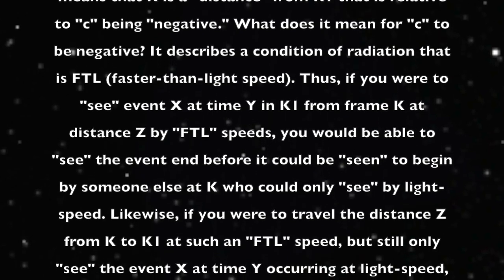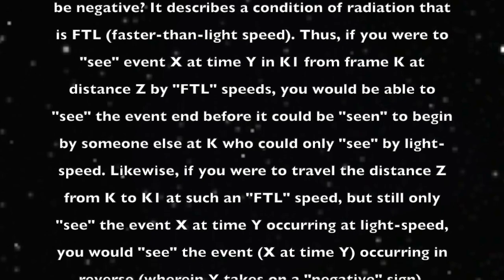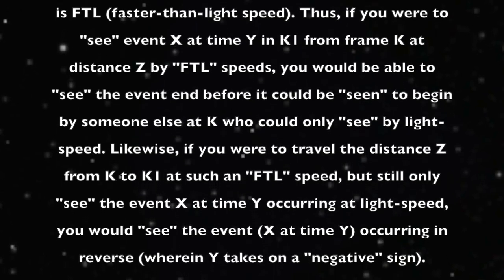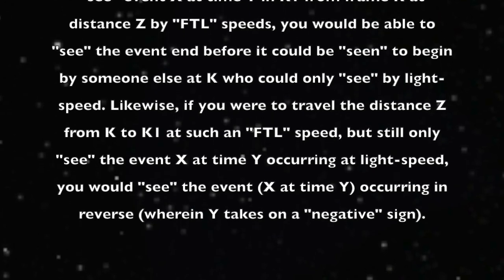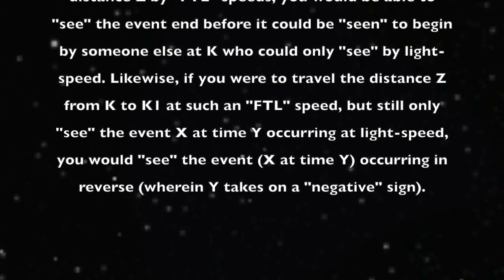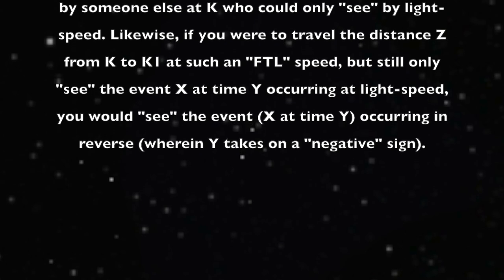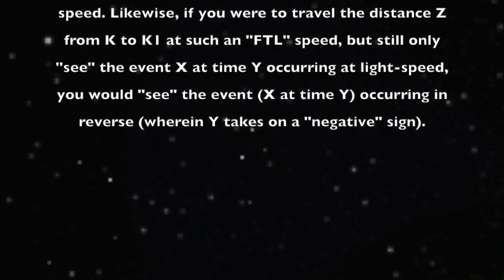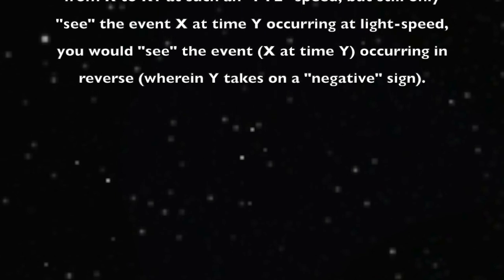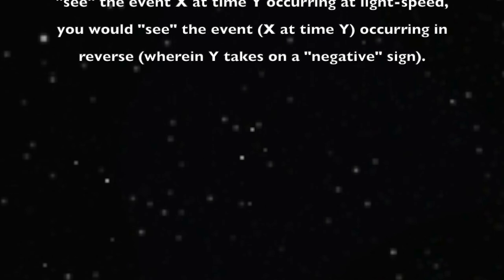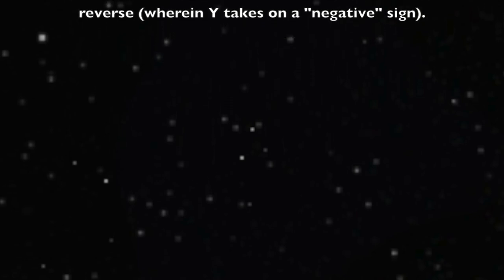Thus, if you were to see event X at time Y in K1 from frame K at distance Z by FTL speeds, you would be able to see the event end before it could be seen to begin by someone else at K who could only observe by light speed. Likewise, if you were to travel the distance Z from K to K1 at such an FTL speed, but still only see the event X at time Y occurring at light speed, you would see the event X at time Y occurring in reverse, wherein Y takes on a negative sign.